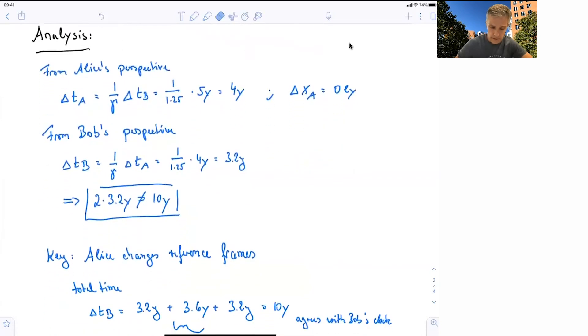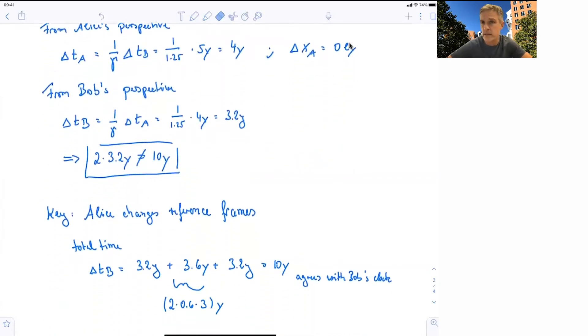But the key to the understanding of this problem is that Alice, in order to return, has to change reference frames. And there, you do have to resynchronize the clocks, if you want, or add a specific extra factor. And we'll go back to this when we look at space-time diagrams.